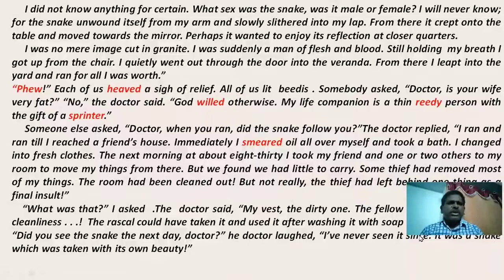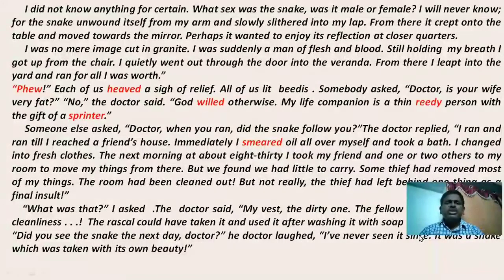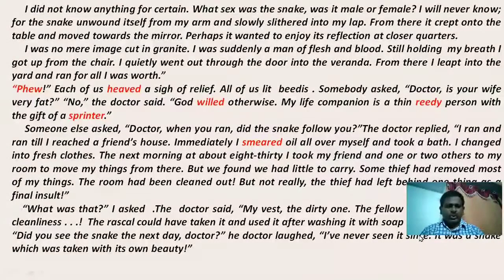I don't know anything for certain. 'Certain' means confirm, sure. Now find the difference: 'I did not know' — he's explaining about the past. 'I don't know' — he's explaining about the present situation. For example: Do you know Telugu? I don't know. Did you play? I did not play. So now you can easily understand the sentence.